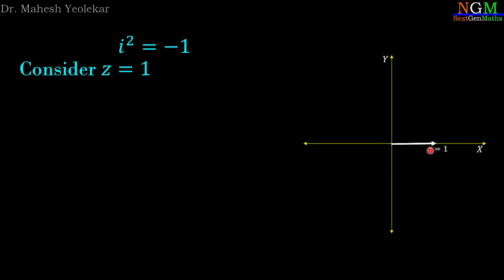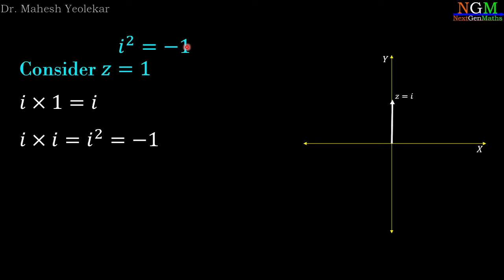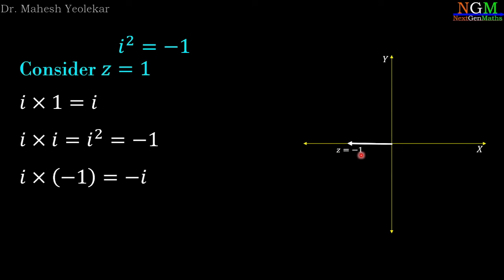We multiply z = 1 by i, then we have i, which lies on the positive y-axis. Now we multiply z = i by i, then we have i² = -1. We plot z = -1 on the complex plane, which lies on the negative x-axis. We multiply z = -1 by i, then we have -i, and -i plotted on the complex plane lies on the negative y-axis.